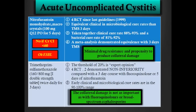Bactrim is still an A1 recommendation in the guidelines — double strength, twice daily for three days. Of course, the breakpoint is 20% per expert opinion, but if we take the guidelines as standard of care, we should not use it empirically. Unless, of course, we have a urine culture showing susceptibility — but in lower urinary tract infection, we don't have a urine culture.